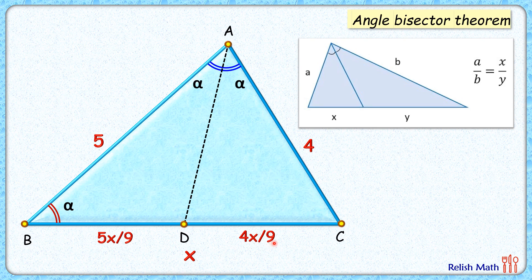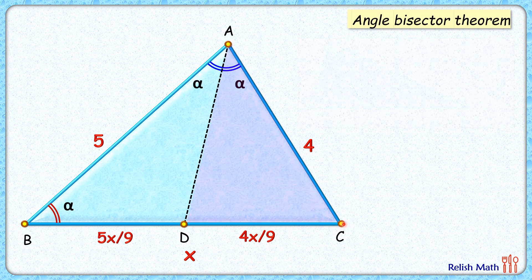Now if you look at triangle ADC, this pink triangle, and the full triangle ABC, both triangles have got angle alpha. This angle is alpha and this angle here is alpha, and both triangles have got this angle C common in them.